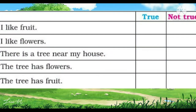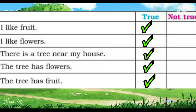Put a tick if it's true and a cross if it's not true. I like fruits — it's true. I like flowers — it's true. There's a tree near my house — it's true too. The tree has flowers — it's true. The tree has fruit — it's true.